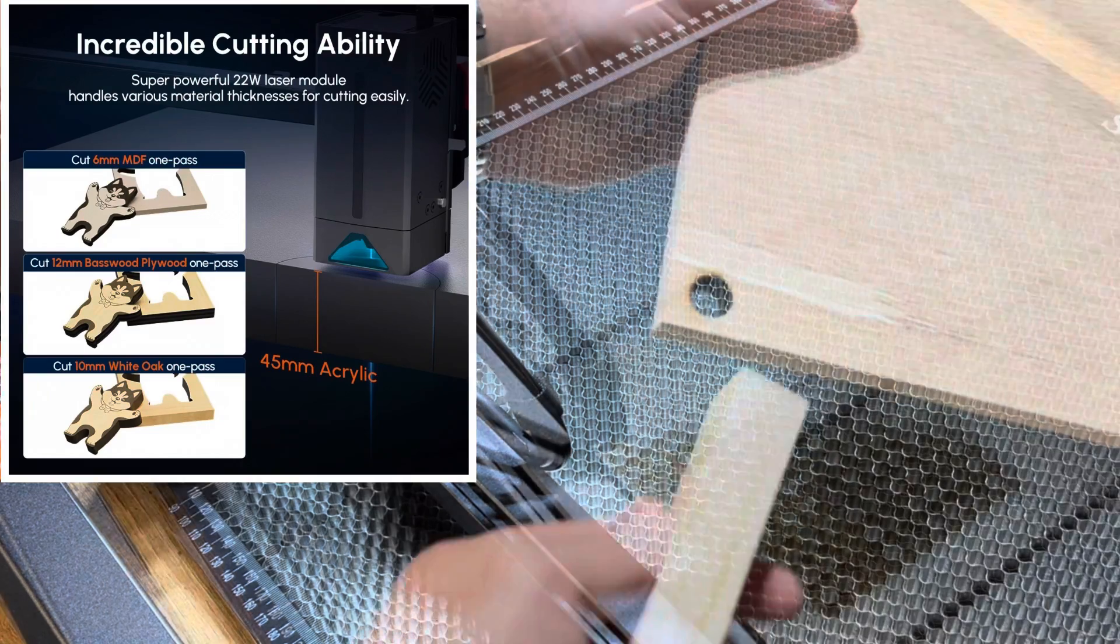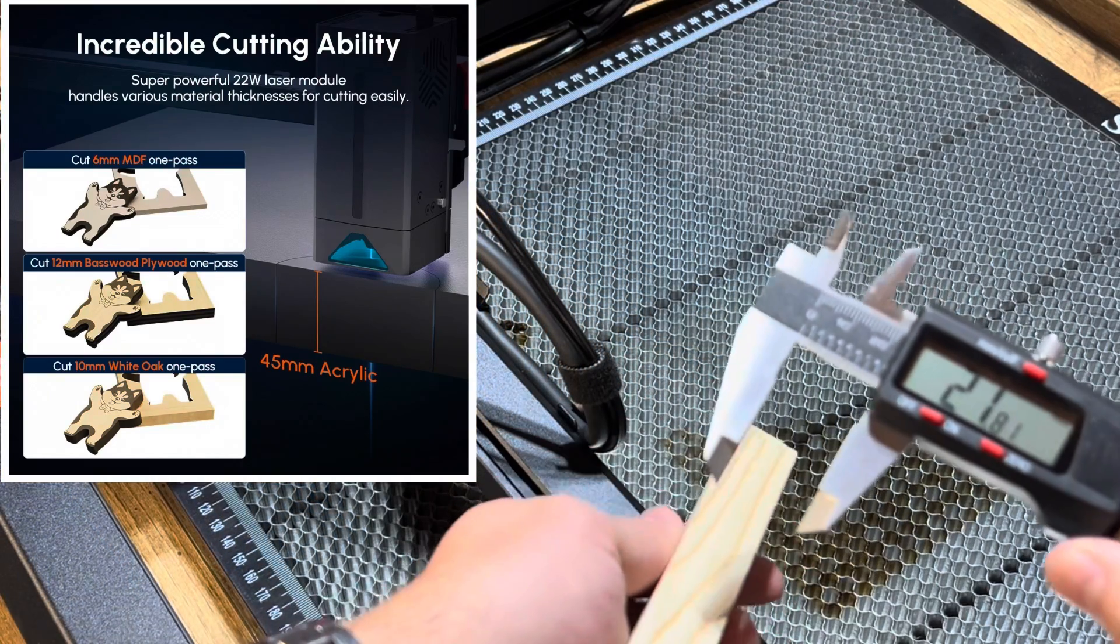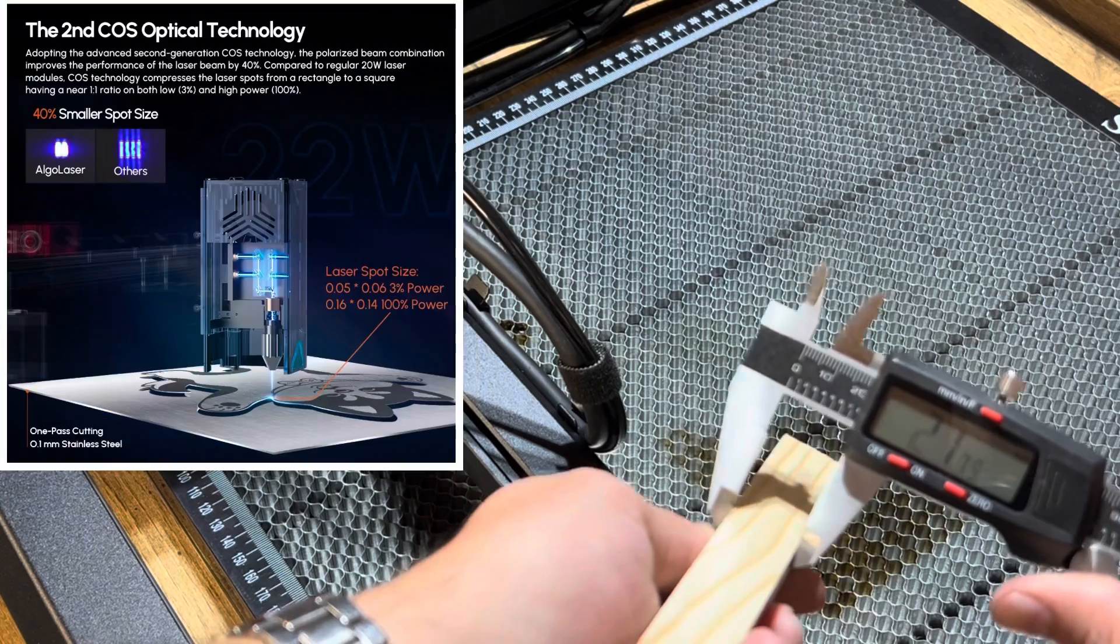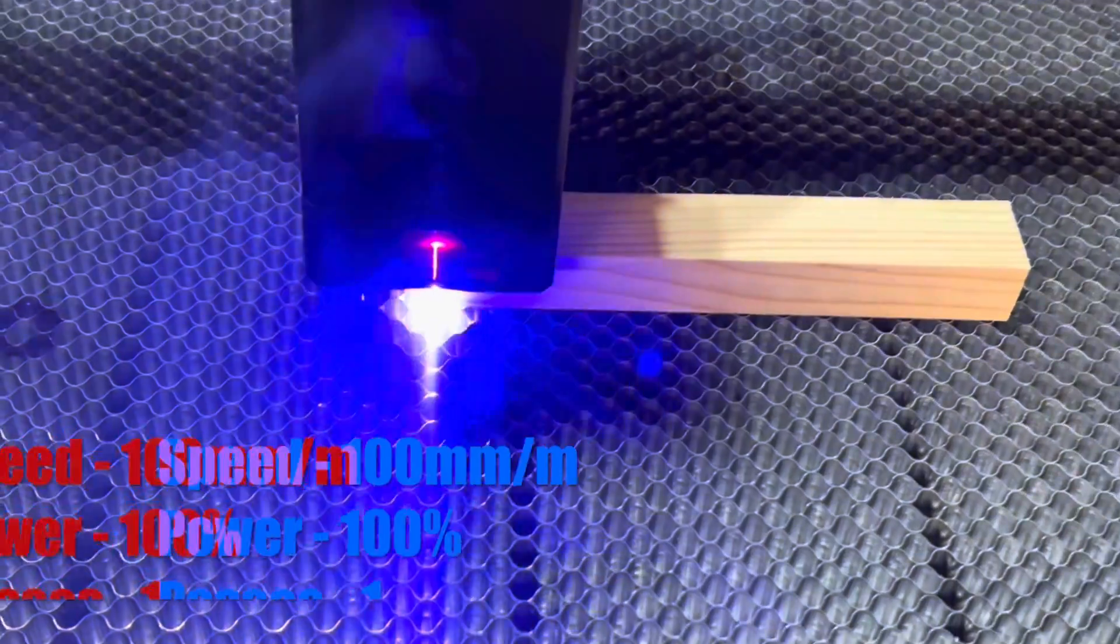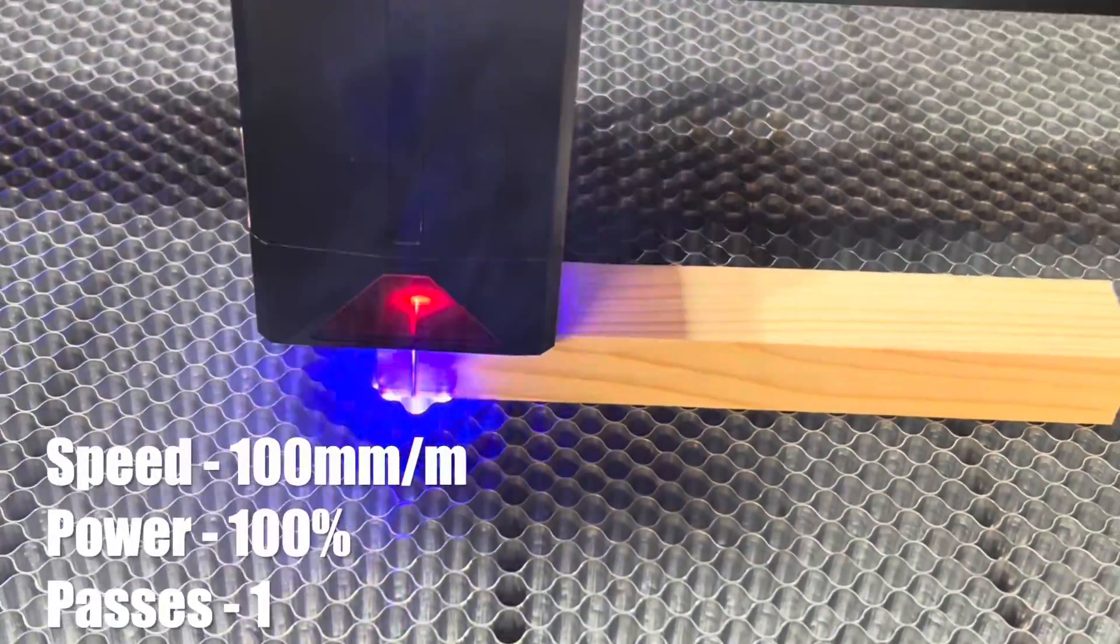The cutting power is incredible, cutting through a variety of wood, acrylic, and steel with a single pass. The technology the machine comes with is advanced for its class, making it more powerful and efficient against its peers.